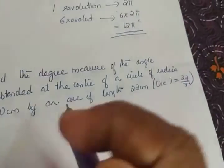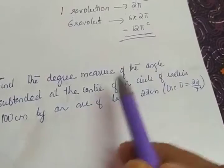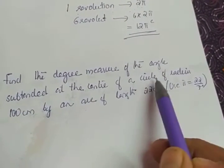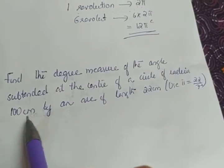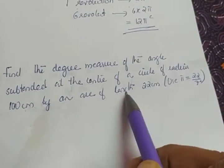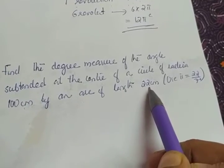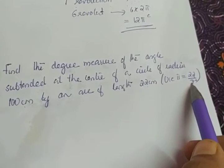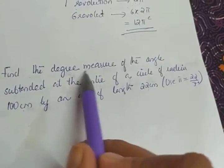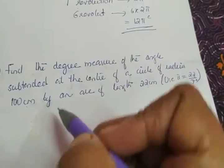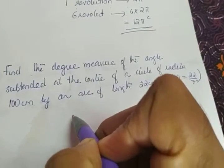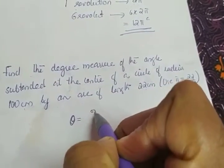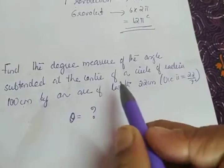The next problem: find the degree measure of the angle subtended at the center of a circle of radius 100 centimeters by an arc of length 22 centimeters. Use π = 22/7. We need to find the degree measure, meaning the unit of angle, so theta is what we have to find.